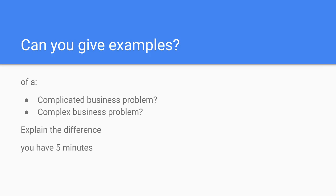Take 5 minutes to come up with a complicated business problem and a complex business problem. Choose one of each and discuss the difference in the chat. Stop the video right now and resume when you have completed the assignment.